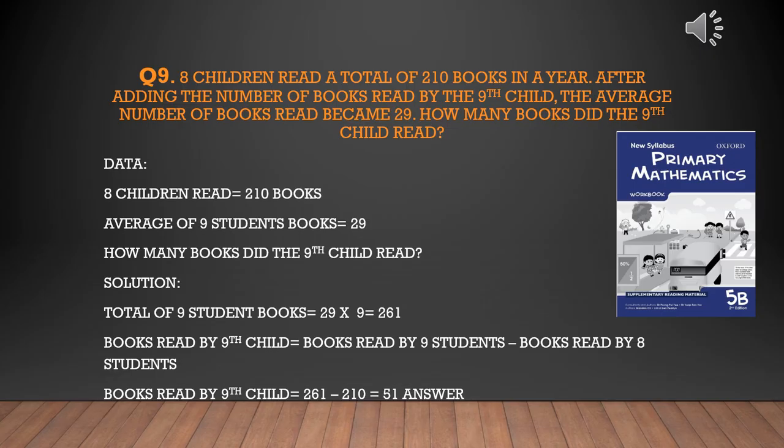The ninth child read 261 — the total number of books for nine students — minus 210, the total number of books for eight students. So 261 minus 210 gives the answer: 51. Thank you very much for your time.